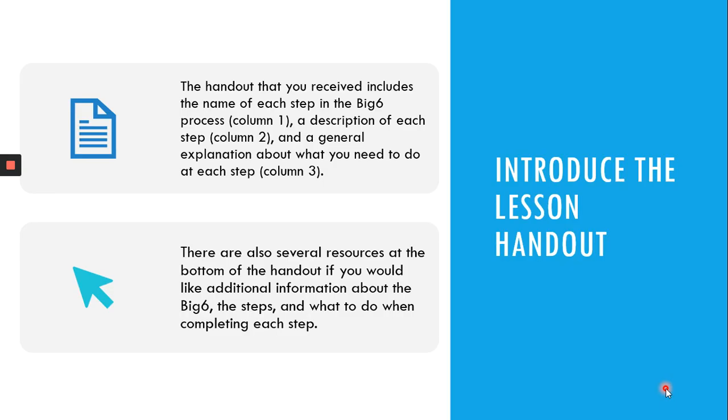So the handout that you receive includes the name of each step in the Big Six process (that's in column one), a description of each step (that's column two), and a general explanation about what you need to do at each step (column three). I will note that is a general explanation, meaning that it can be modified and changed to fit different assignments and the different courses that you could be using this process with.